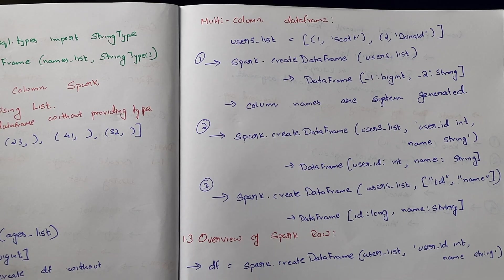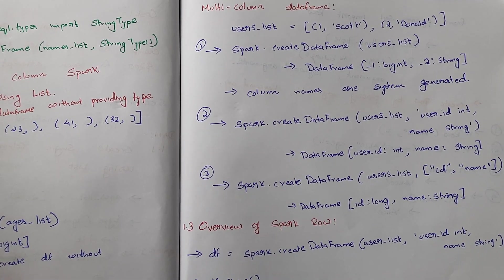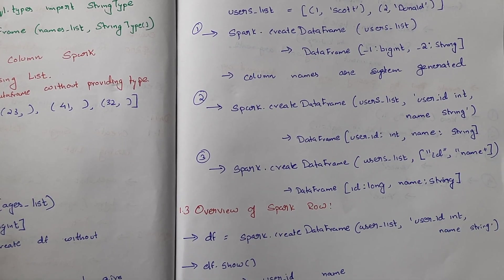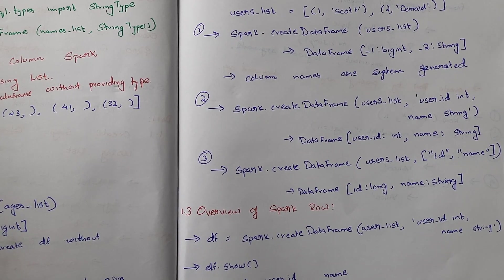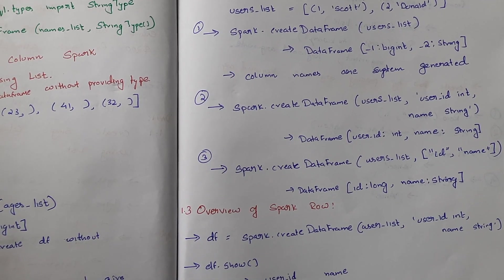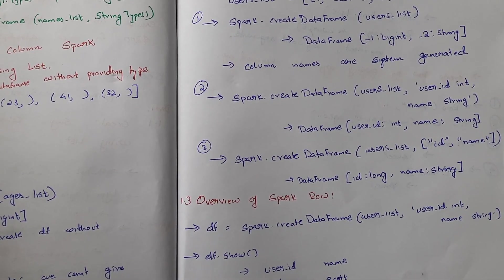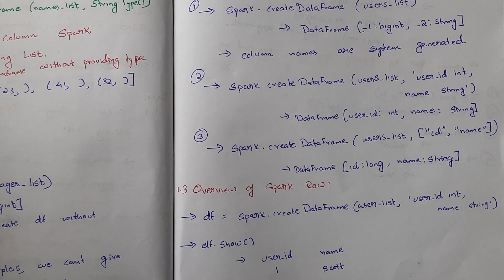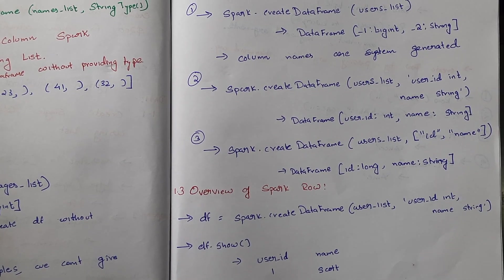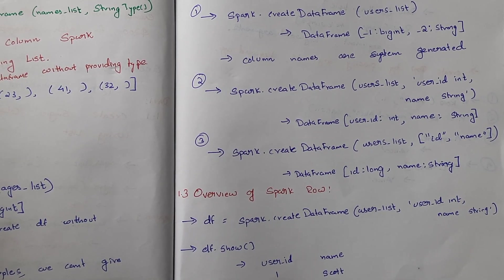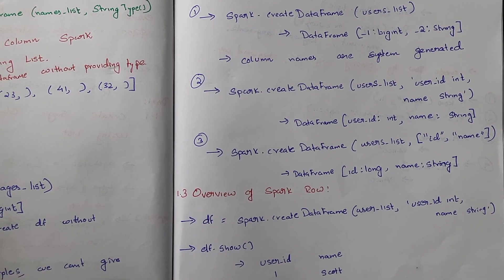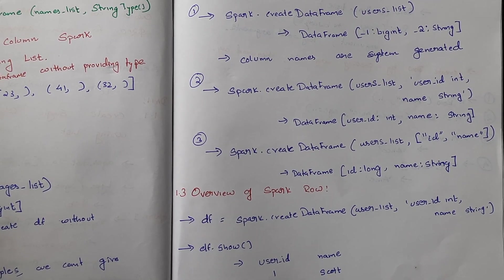The column names are system-generated by default. To provide a schema, we call spark.createDataFrame(users_list, schema='user_id integer, name string'). This creates the DataFrame with column 'user_id' as integer instead of the default _1 with bigint, and column 'name' as string.